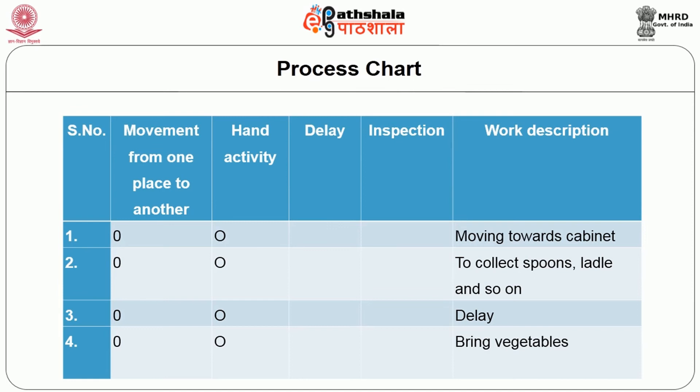There is a chart provided over the schedule to show the work description of the person. Movement from one place to another is represented by a circle, hand activity is represented by 'O', delay is represented by an inverted triangle, and inspection is represented by a square. Work descriptions include: moving towards the cabinet, collecting spoons and ladle, delay, bringing vegetables.